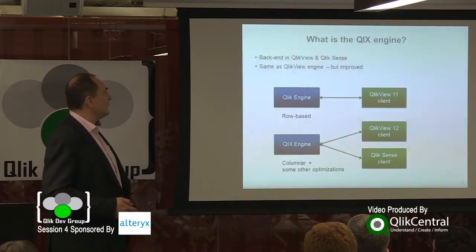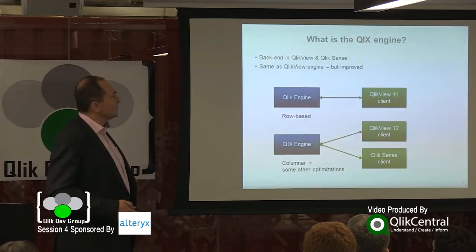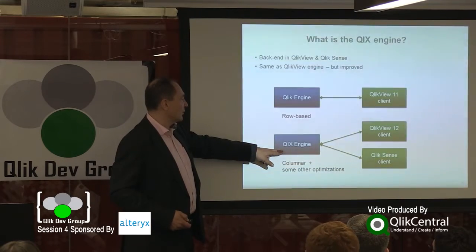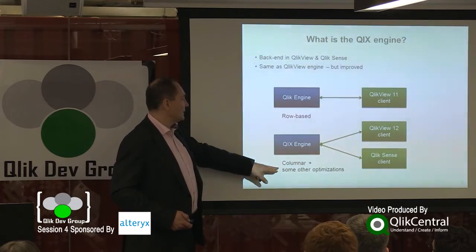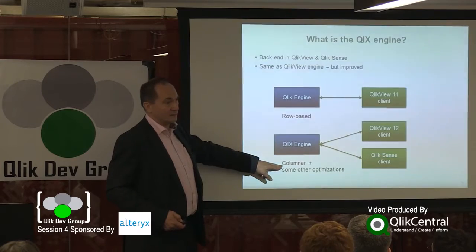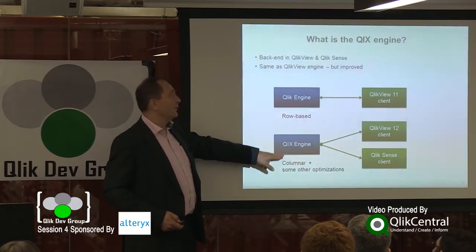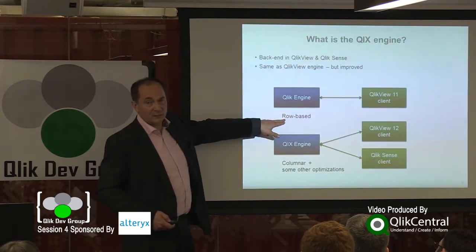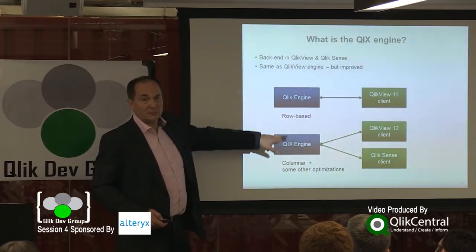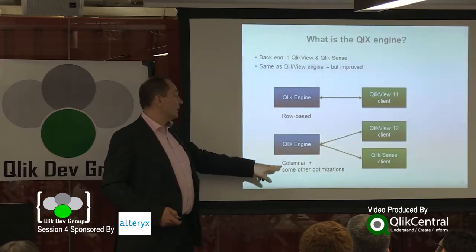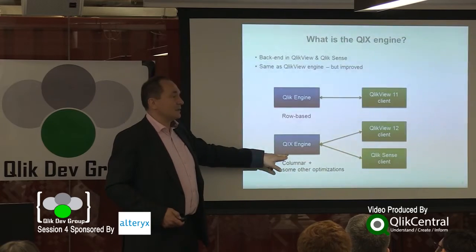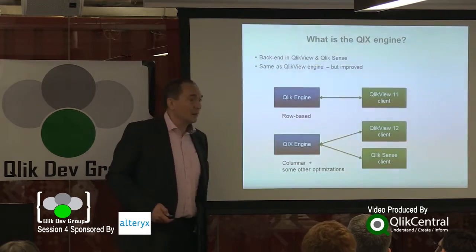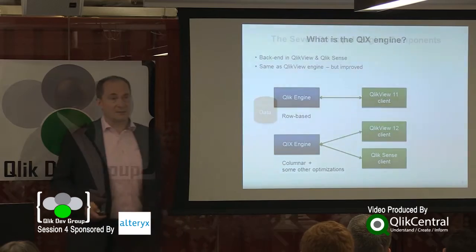The main difference between these two is really that the Qlik's engine, the more modern one, is columnar, whereas the old one is row-based. So this one is in fact faster. In addition, there are some other optimizations.